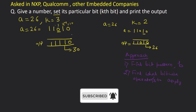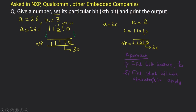Let's see how to approach these types of questions that work on the bits of a number. The approach has two steps: first, find a bit pattern which we call b; second, find which bitwise operator or operators to apply on a and b so that we get our desired output.